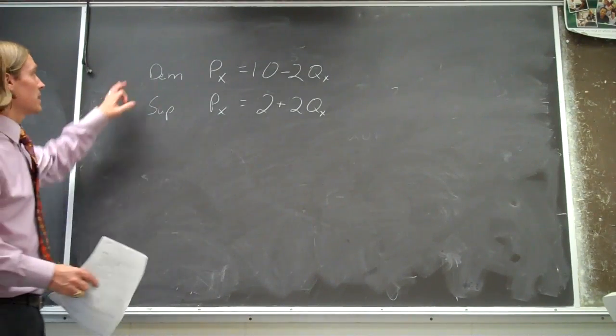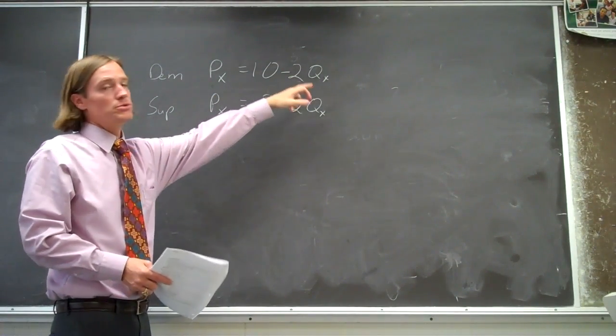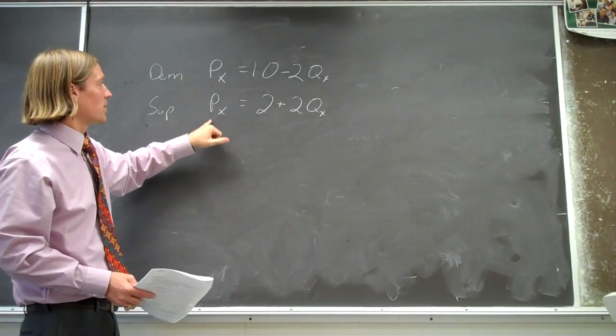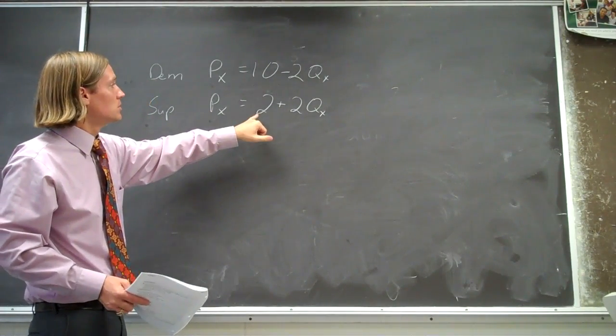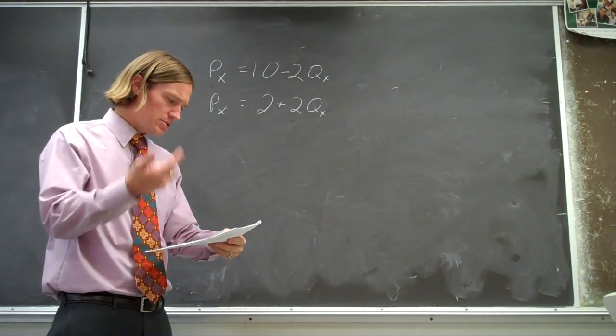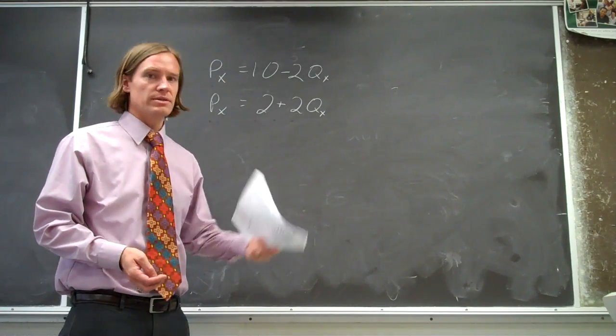Alright, so we've got a demand equation, px equals 10 minus 2qx, and we've got a supply equation, where the price of x is equal to 2 plus 2 times quantity x. And this question asks to compute the equilibrium price and quantity in this market.